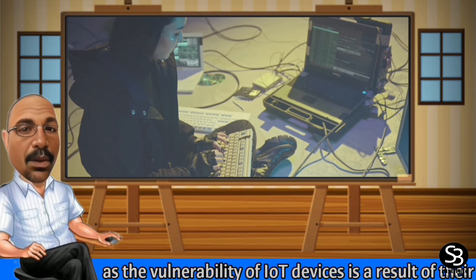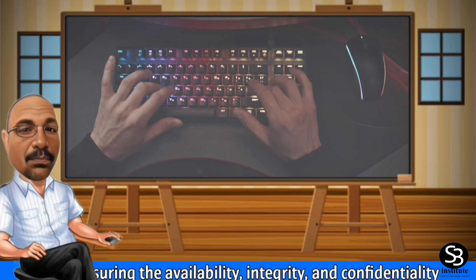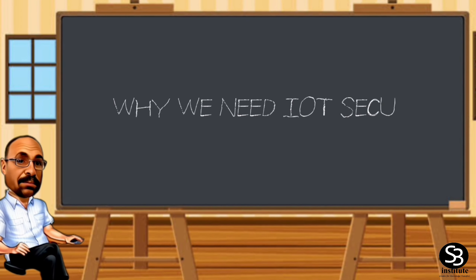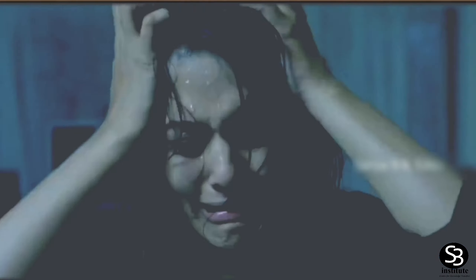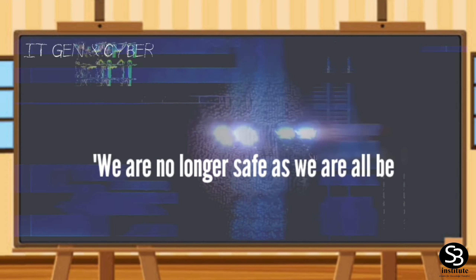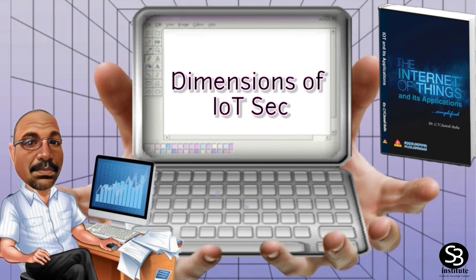IoT security involves protecting IoT systems from cyber attacks, as the vulnerability of IoT devices is a result of their connection to the internet. Ensuring the availability, integrity, and confidentiality of IoT solutions is essential. Let's discuss why we need IoT security.